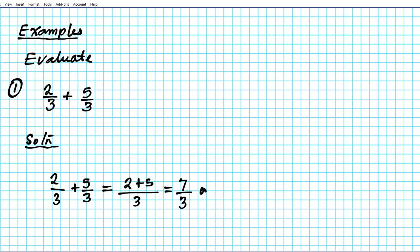Seven divided by three. You can also express this as a mixed number. You divide seven by three: three goes into seven twice with remainder one, so we can write it as two and one-third. So these are the answers in two different forms for question number one.